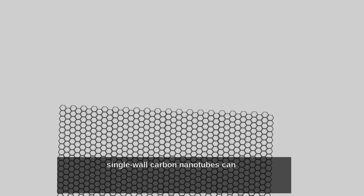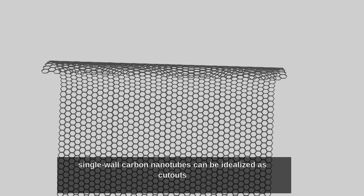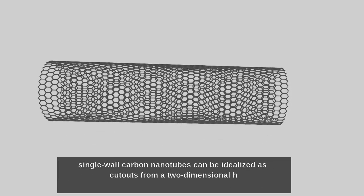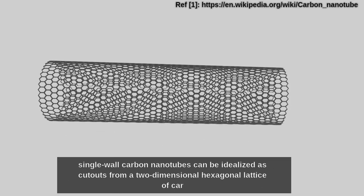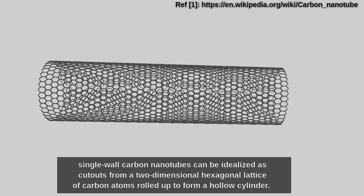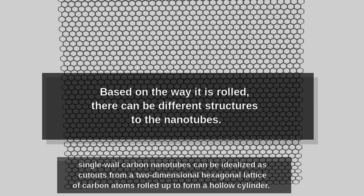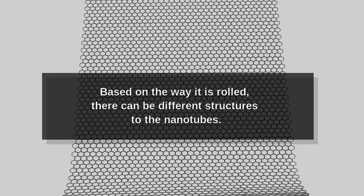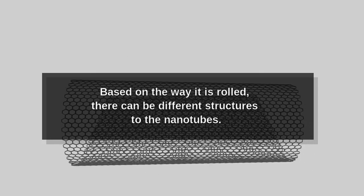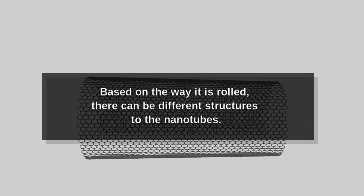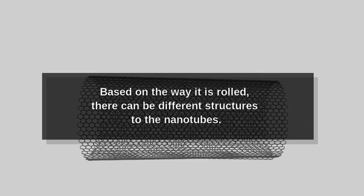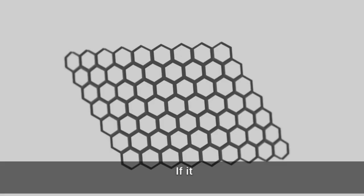Single-wall carbon nanotubes can be idealized as cutouts from a two-dimensional hexagonal lattice of carbon atoms rolled up to form a hollow cylinder. Based on the way it is rolled, there can be different structures to the nanotubes.